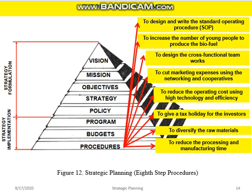Procedure: design and write the standard operating procedure to increase the number of young people to produce biofuel; design the cross-functional teamwork; cut marketing expenses using networking and cooperative; reduce operating costs using high technology and efficiency; give a tax holiday for investors to diversify the raw material; and reduce the processing and manufacturing time.